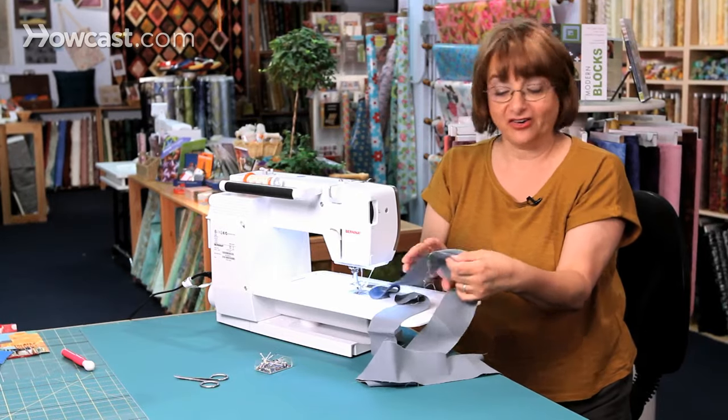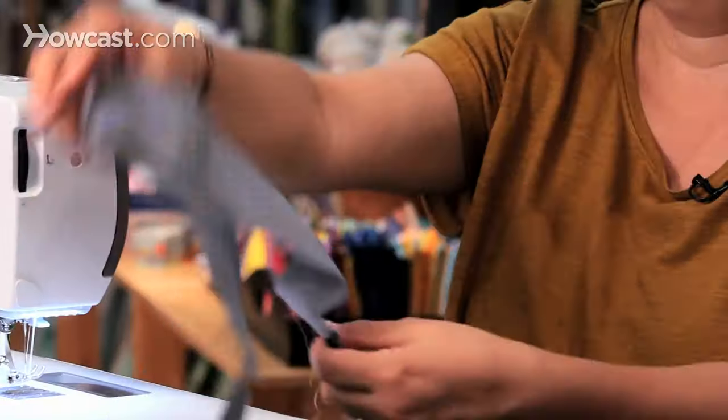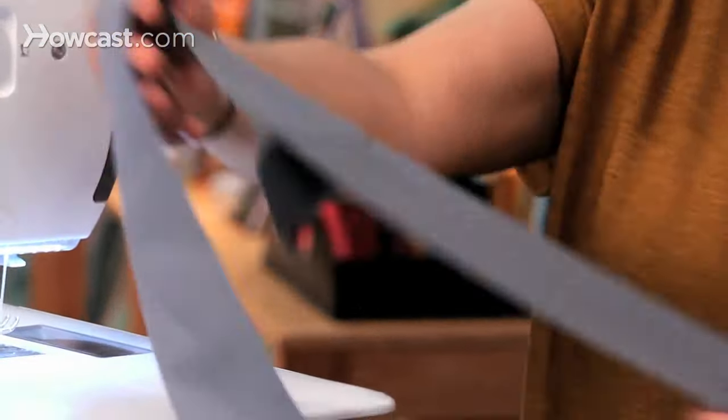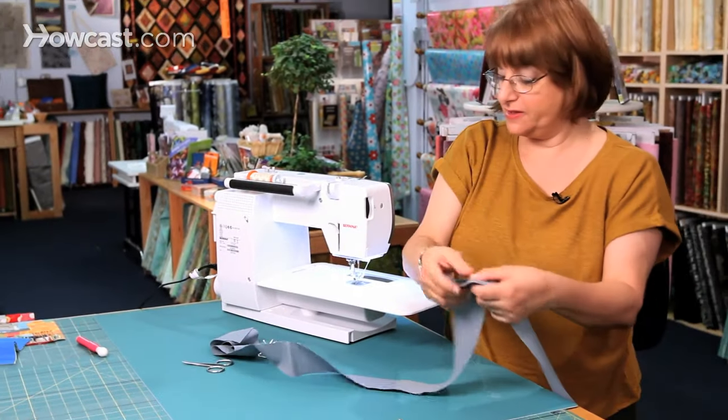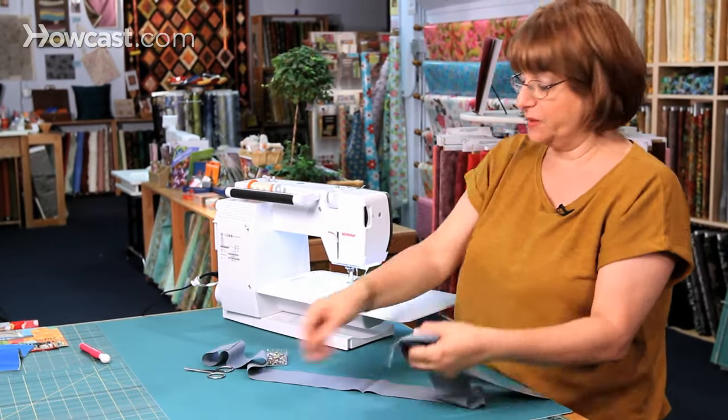When you take your pins out, you're going to have your continuous binding. The next thing you want to do is just trim off your seam allowance.